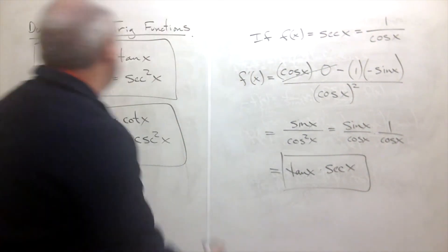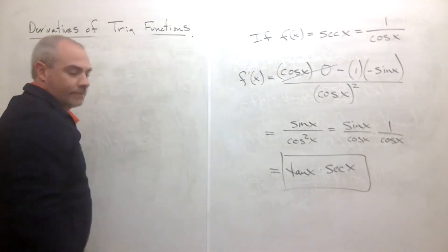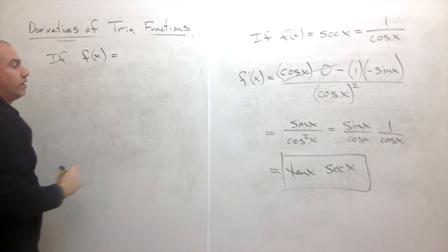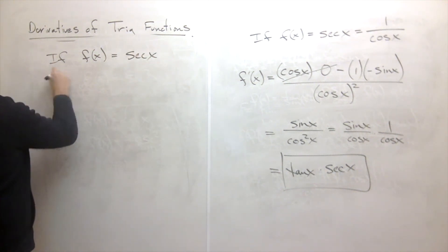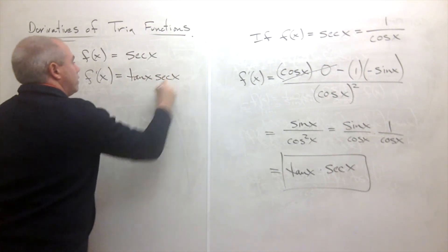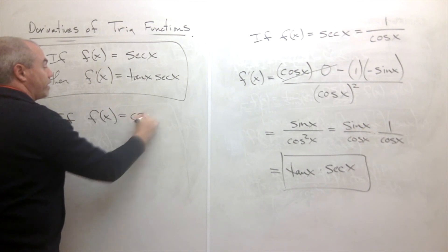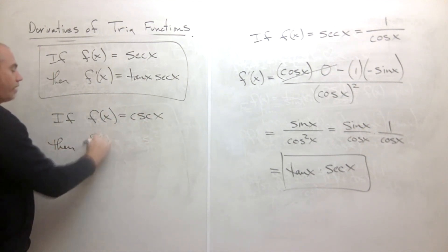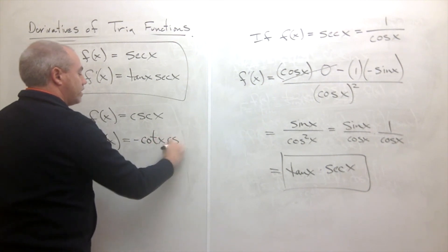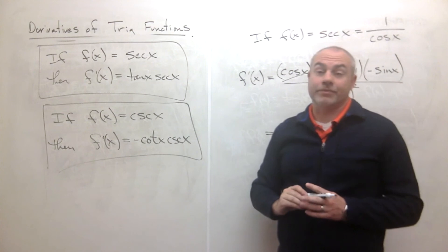So if f of x is equal to secant of x, then f prime of x is equal to tangent x times secant x. And similarly, if f of x is cosecant of x, then f prime of x is negative cotangent x times cosecant of x. And now we have derivatives for every one of our trigonometric functions.